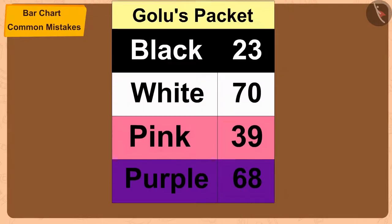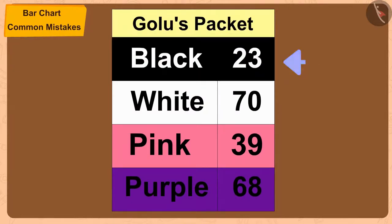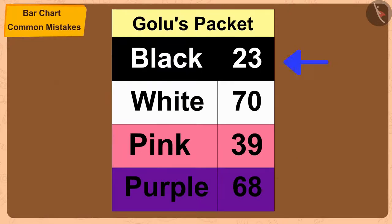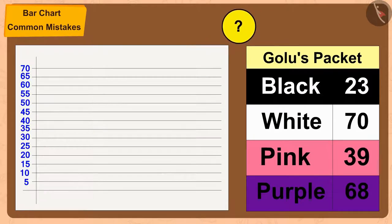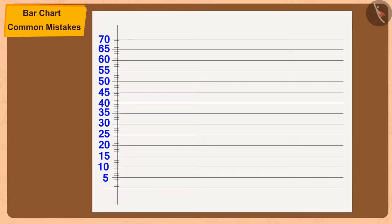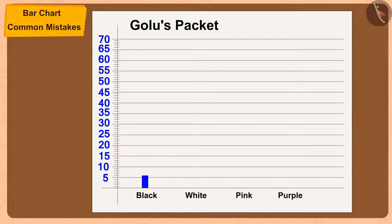Golu points out that the number of black balloons is 23, which is not a multiple of 5, so he asks how to show 23 on this bar chart. Chanda explains the solution: make 5 small equal parts between the numbers on the scale. Golu quickly showed 23 by drawing a rectangle of height 3 small parts higher than 20.